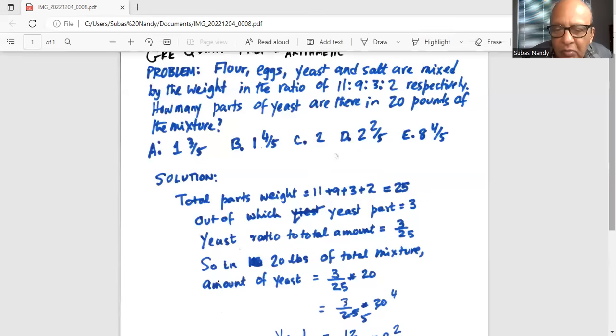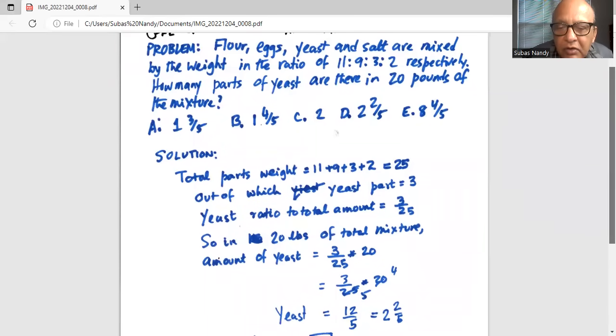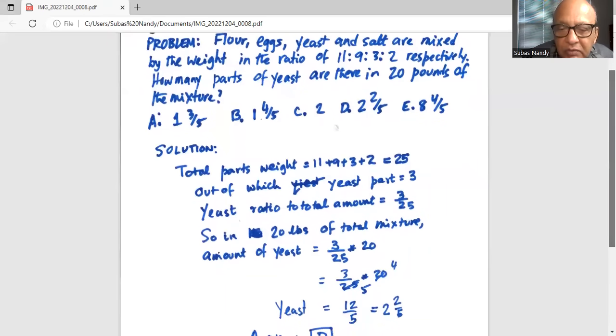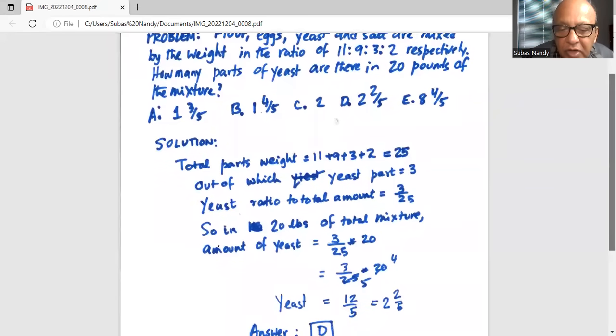Now if you factor out the common factor 5 between 20 and 25, 5 goes into 20, 4 times and 5 goes into 25, 5 times. So you have 3 times 4 in the numerator divided by 5, which is 12 divided by 5.